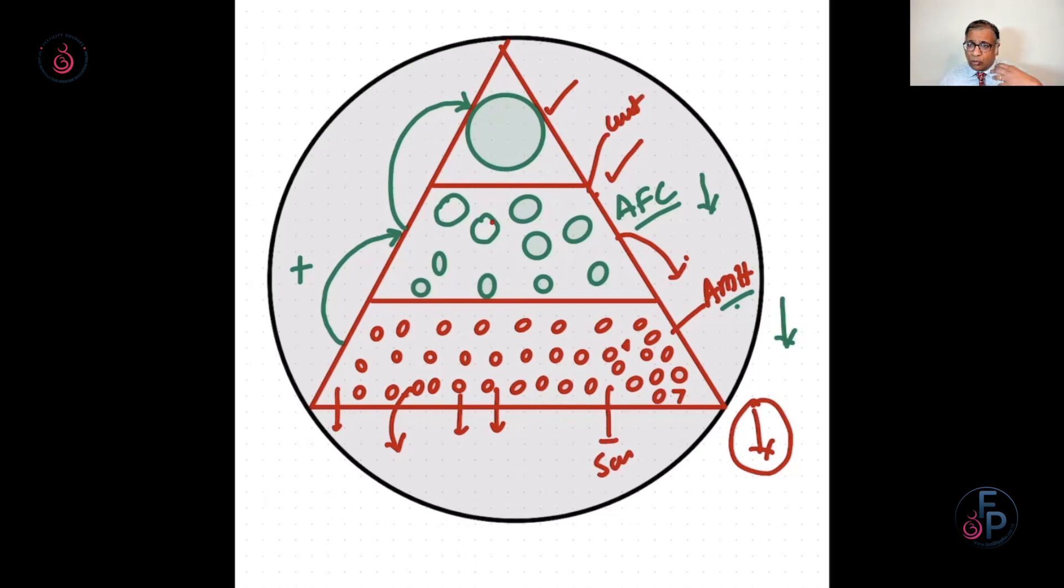Now, what you have to again realize is that there are small follicles. If you draw a line here, follicles that are less than four millimeter are unlikely to get recruited. They're not meant for that cycle. Follicles that are more than four millimeter are more likely to get recruited in that cycle. Thus, if you don't scan the ovary well, you'll find it difficult to see how that ovary is going to react.